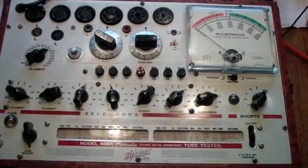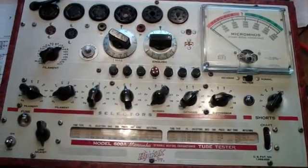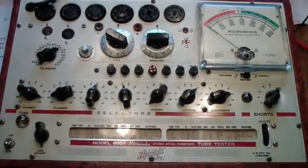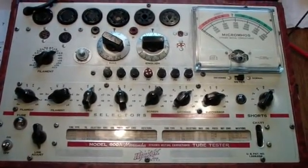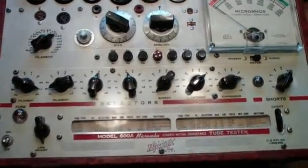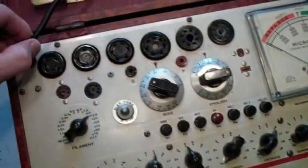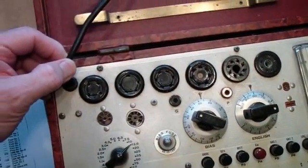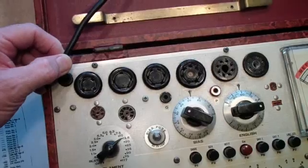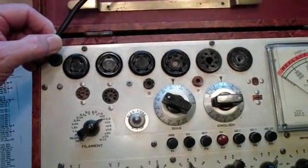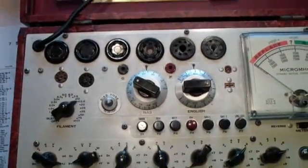So let's look up an 83. Now remember I said a mutual conductance tester doesn't do you any special good with rectifiers. But the reason we're using this one is because it does have that 4-pin socket that we need, and it will test a type 83 tube. But it tests it only for emission, of course, because there are no grids in the rectifier.